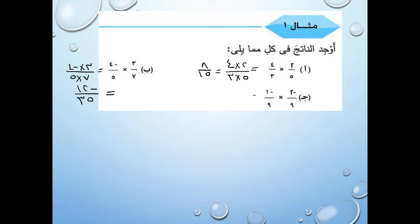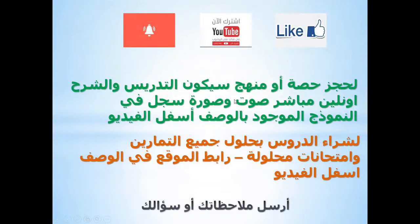ما فيش اختصارات هنا. سالب في سالب بتدي موجب، فـ (-2/9) × (-1/9) = 2 × 1 على 9 × 9 = 2/81. ده الدرس بالكامل، ما فيش أي مشكلة إطلاقاً.